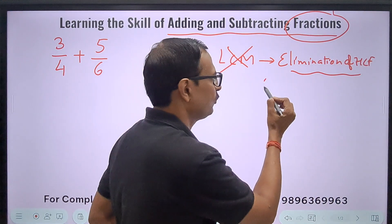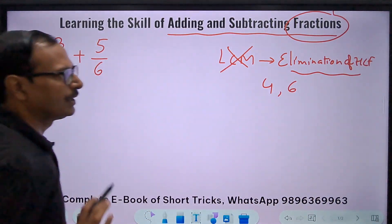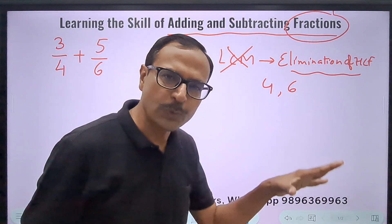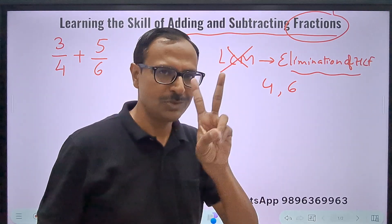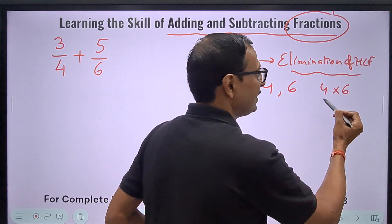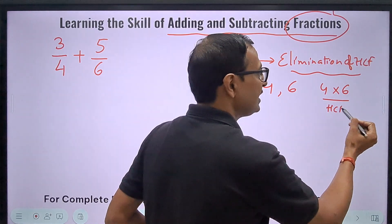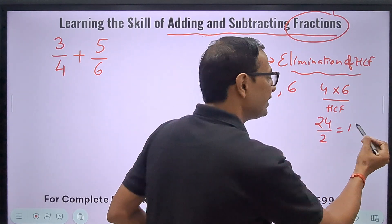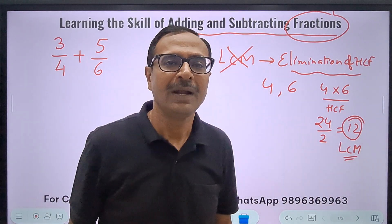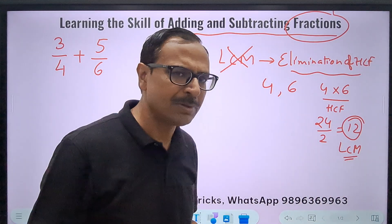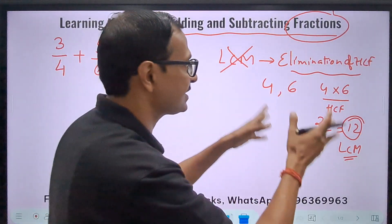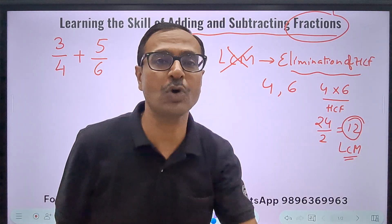This is elimination of HCF, highest common factor. Now LCM is always found out by eliminating the highest common factor. I'll show you how. See, 4 and 6, in this case, the denominators. What is the highest common factor? Can you tell me? The highest common factor between 4 and 6 is 2. So if I take the product of 4 and 6 and divide the result by the HCF, that is 24 by 2, I will get the LCM. Let's not complicate by thinking that we are finding LCM. Let's remember the step.